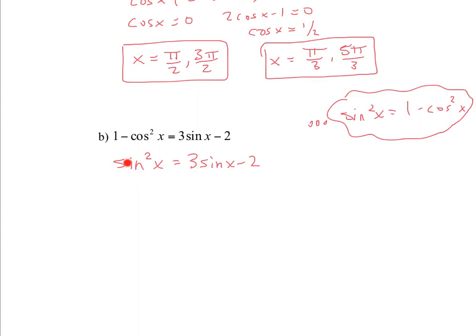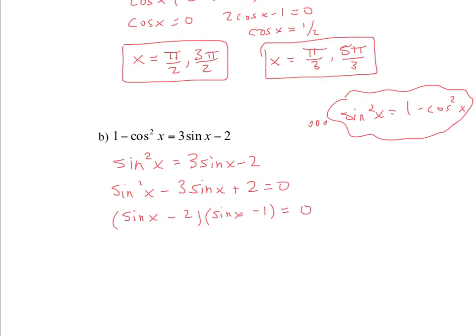Now our problem is we need to bring all the terms to the same side — we need equal to 0 on one side so we can factor the other. I'm going to move everything over here because we have the largest degree, sin squared, with a positive coefficient. So we have sin squared x minus 3 sin x plus 2 equals 0. Now we have a trinomial to factor. To get sin squared, we have sin times sin. Two terms that multiply to positive 2 and add to negative 3 — that's negative 2 and negative 1. Negative 2 plus negative 1 gives negative 3, and negative 2 times negative 1 gives positive 2.